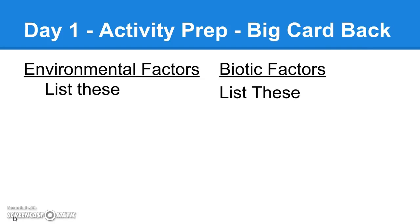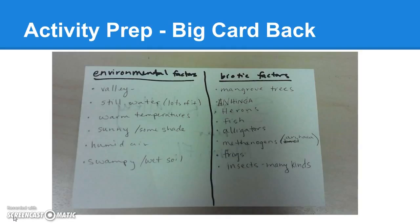On the back of the big card they'll put a line down the middle. On the left they'll put a list of the environmental or non-living abiotic factors, and on the right they'll list the biotic factors in that ecosystem. In my example I try to include all the different things from the notes — like air, temperature, water availability, soil — as well as different organisms that interact with each other, not just animals but plants and even archaea.